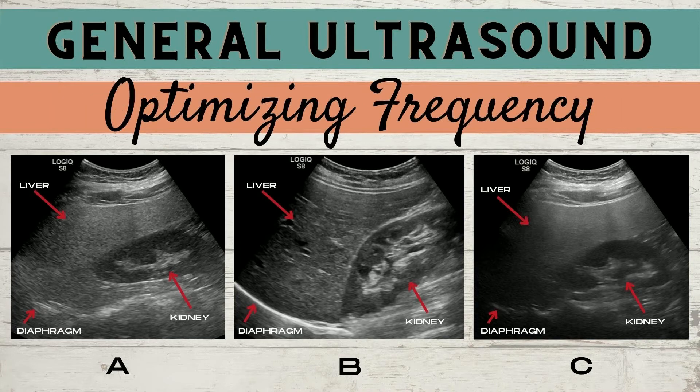First, we're going to identify the structures. In these images, the gray structure is the liver. The two-tone image, which has a brighter center and a darker outer rim, is the kidney. And then the hyperechoic, highly reflective structure at the bottom of the image is the diaphragm.